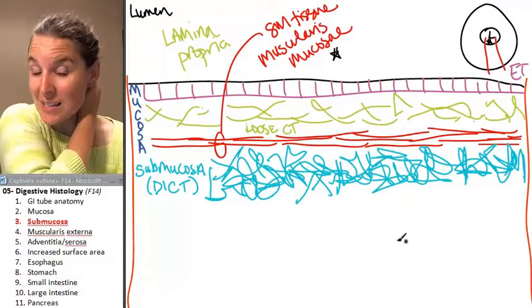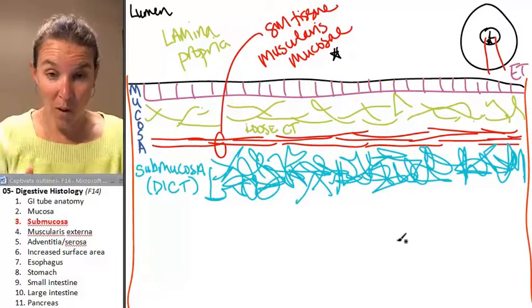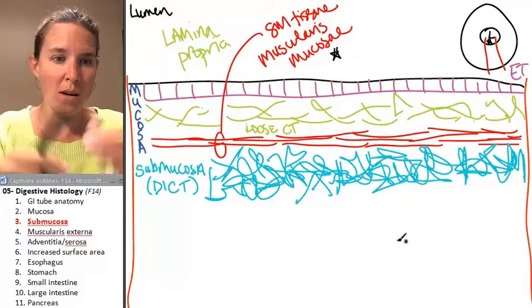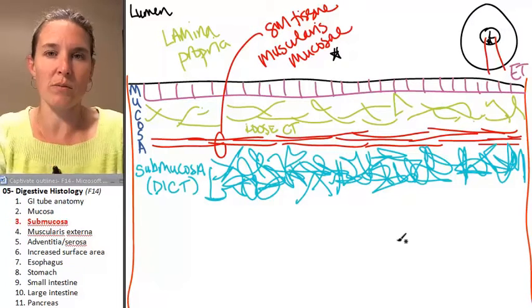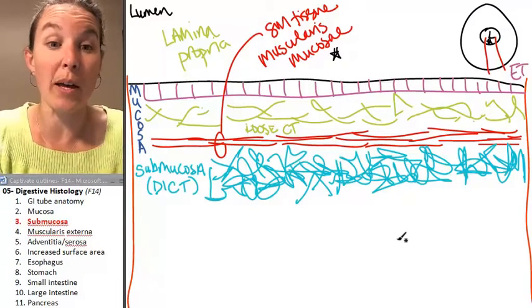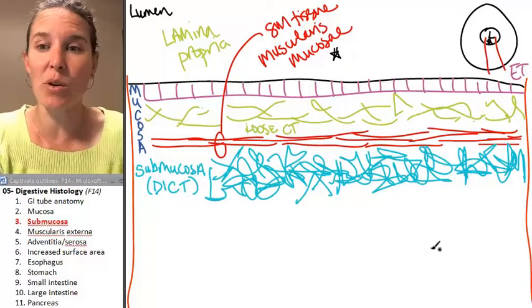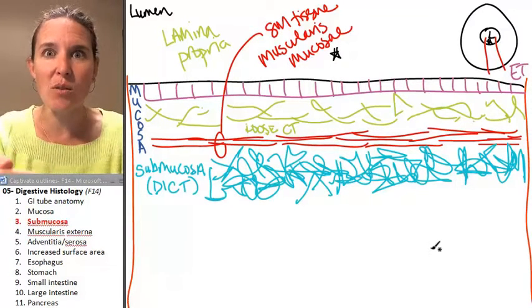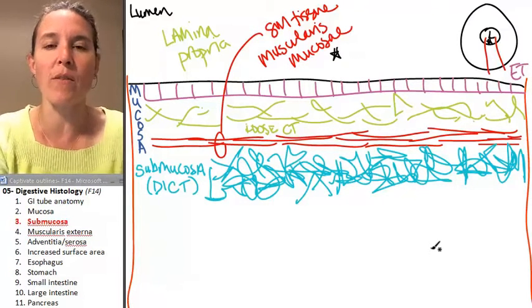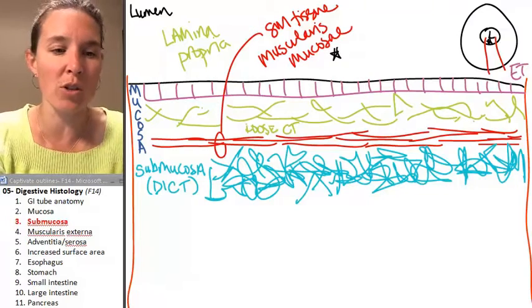Now, the next layer — we've got two more sections. We're going to go deep to that, so we're continuing to move away from the lumen of our tube.